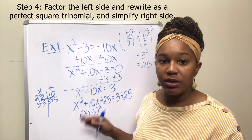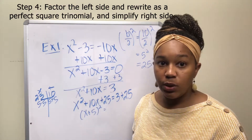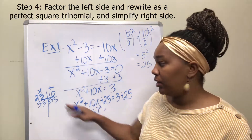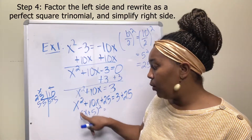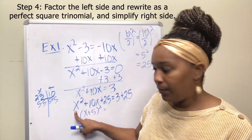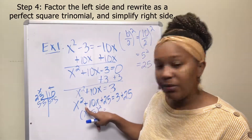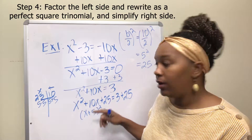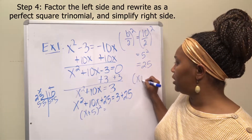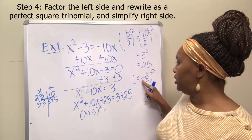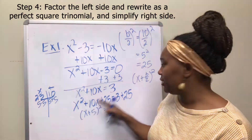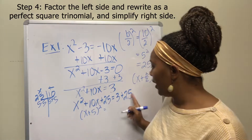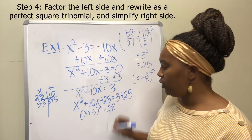That was the whole purpose of completing the square — to create a perfect square. This will work every time. The variable will always be the same, the sign will always be the same as the b term's sign, and the number will always be half of b. So when it factors, it always looks like x plus b over 2, squared. If b is positive, the sign is positive; if b is negative, the sign is negative. On the right side, you add 3 and 25 to get 28.